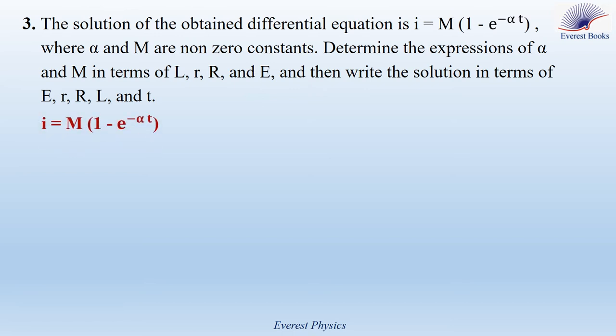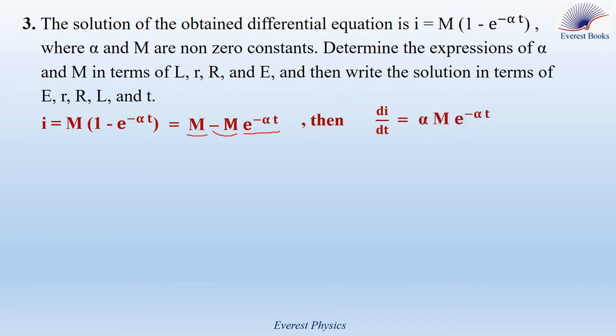I is equal to M·(1 minus e to the power minus α·T). Expanding, I becomes M minus M·e to the power minus α·T. Now we differentiate I with respect to time. M is constant so its derivative is 0. The derivative of minus M·e to the power minus α·T gives minus M times minus α·e to the power minus α·T. Therefore, dI/dt is equal to α·M·e to the power minus α·T.